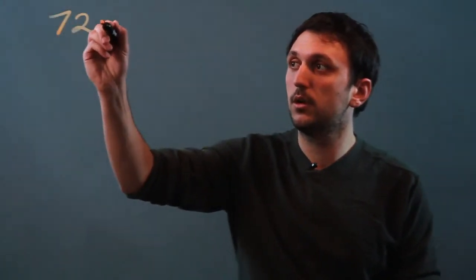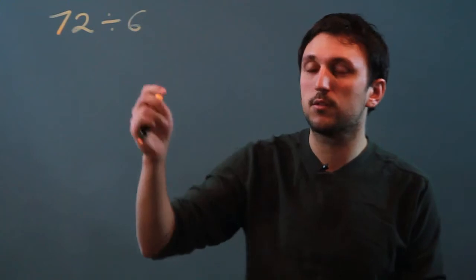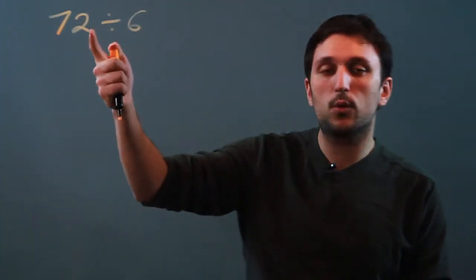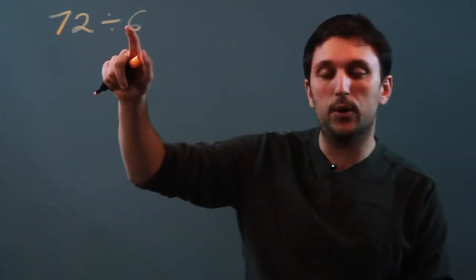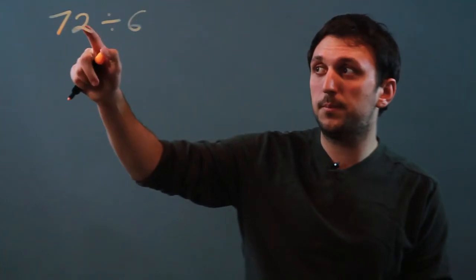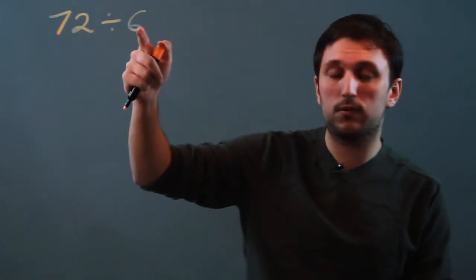Let's say we have 72 divided by 6. Now, we never want to do the math like this, but this is how it'll be written. We're trying to take 72 and put it into six parts.